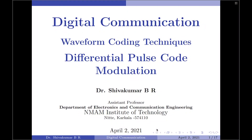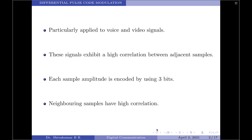Hello everyone, welcome to digital communication tutorials. In this video I am going to discuss on the topic differential pulse code modulation. Differential pulse code modulation is a technique of analog to digital signal conversion that is particularly applied to voice and video signals. The reason for this is that these signals exhibit a high correlation between adjacent samples.